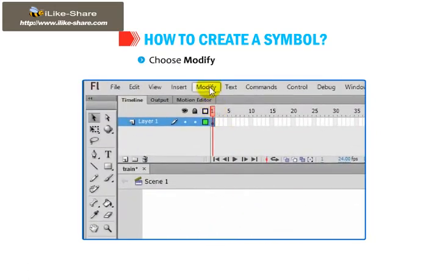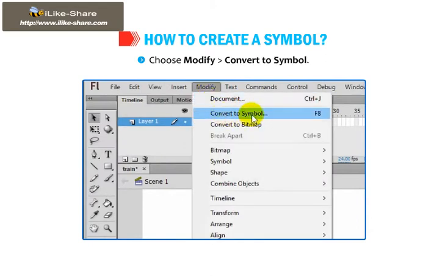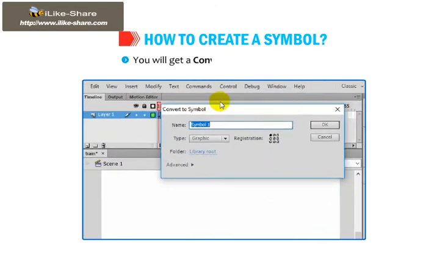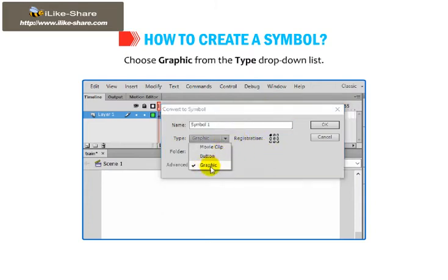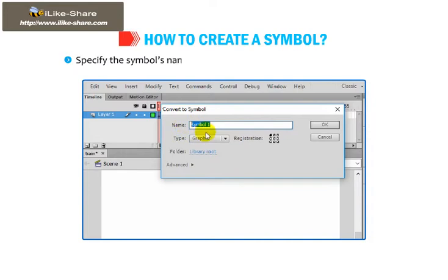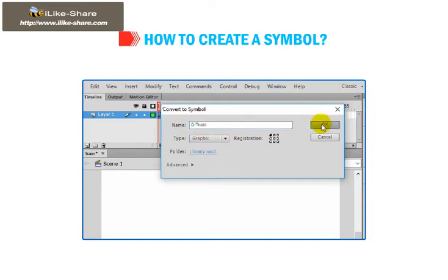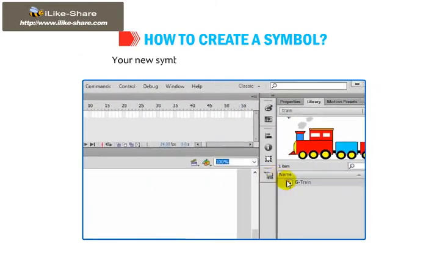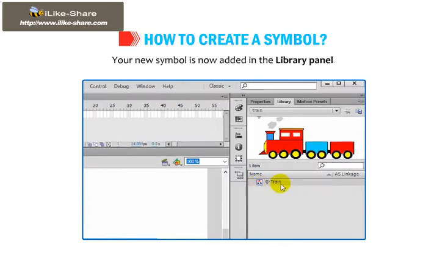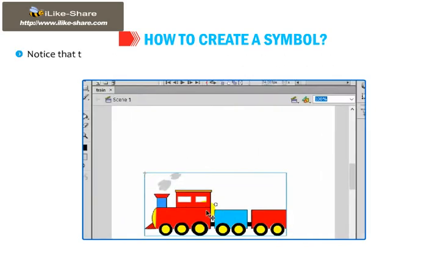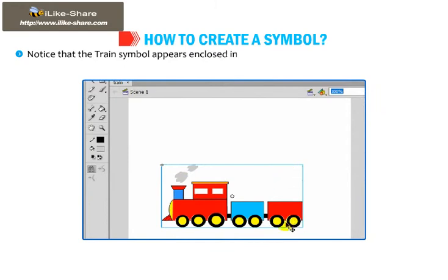Choose Modify, then go to Convert to Symbol. You will get a Convert to Symbol dialog box. Choose Graphic from the type drop-down list. Specify the symbol's name — G-train — in the Name text box and click OK. Your new symbol is now added in the library panel. Notice that the train symbol appears enclosed inside a blue bounding box with a small hollow circle in the middle.